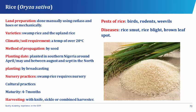The land preparation of rice is done either manually using cutlass and hoes or mechanically by plowing, harrowing, and ridging. Varieties of rice include the swamp rice and the upland rice. The climatic or soil requirement of rice is a temperature of over 20 degrees centigrade and the method of propagation is by seed. Planting of rice is done by broadcasting, sowing, or drilling of the seeds at 2–4 cm deep.